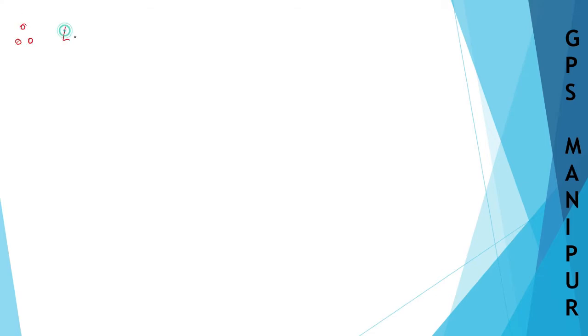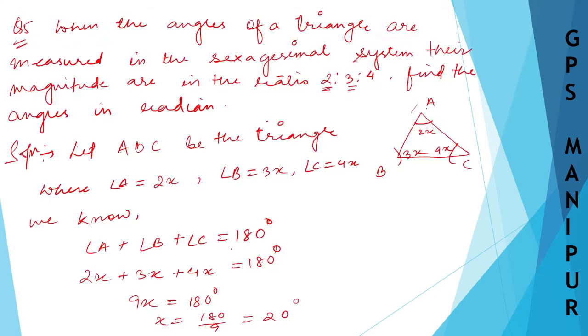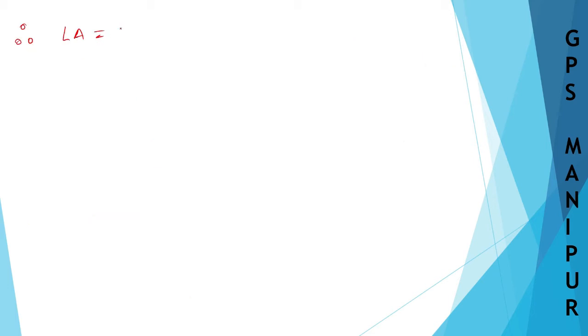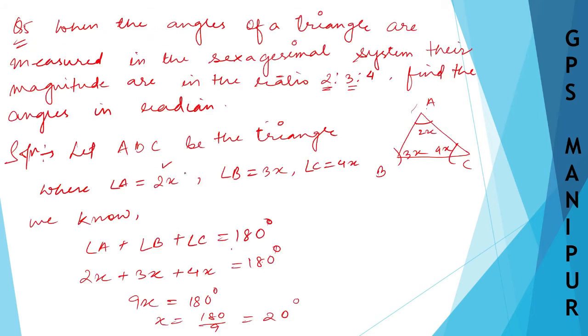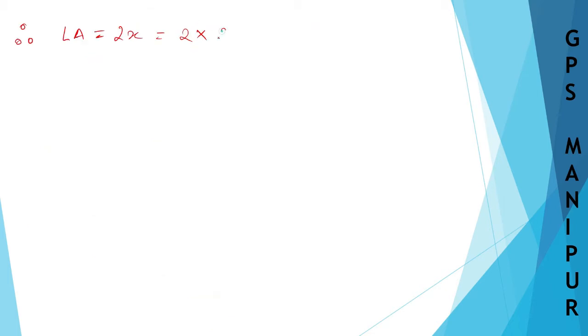Therefore, angle A is equal to 2x, which will be equal to 2 into 20 degrees, which is 40 degrees. The question is asking us to convert it into radians.